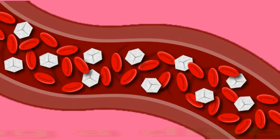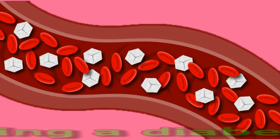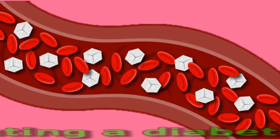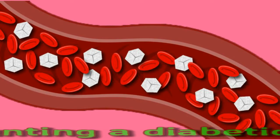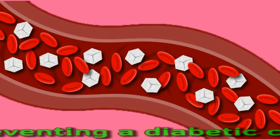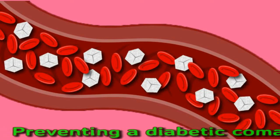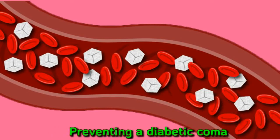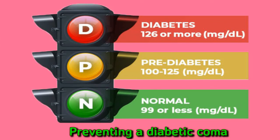To reduce the risk of a diabetic coma, it is recommended to know what it feels like to have high and low blood glucose, check blood glucose levels especially when sick, limit alcohol consumption and avoid alcohol after strenuous exercise, and test blood ketone levels if you have type 1 diabetes after exercising. Monitoring for signs of low blood sugar — especially at night — is also important.